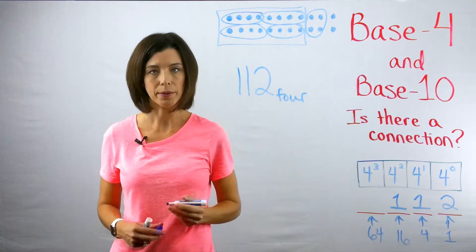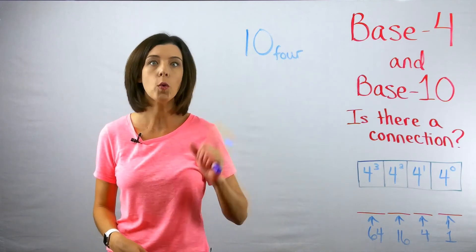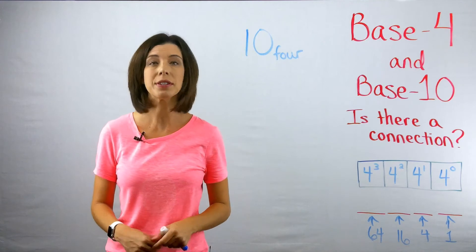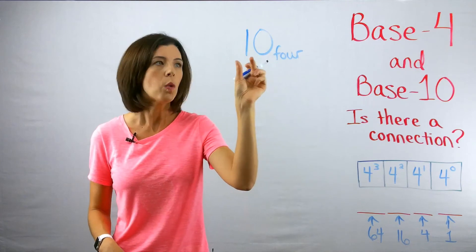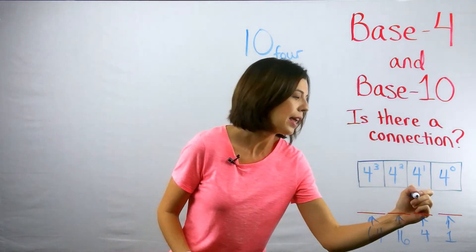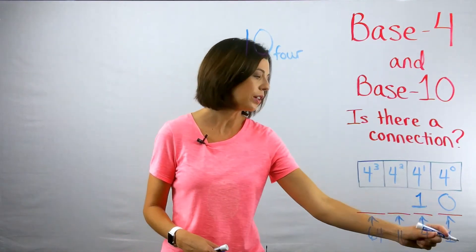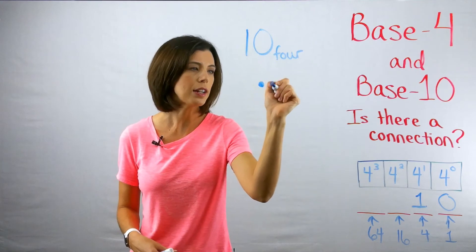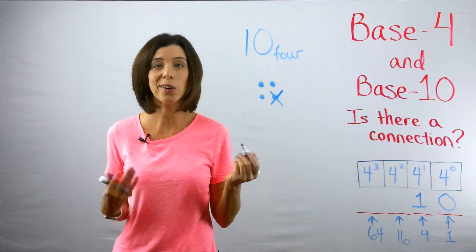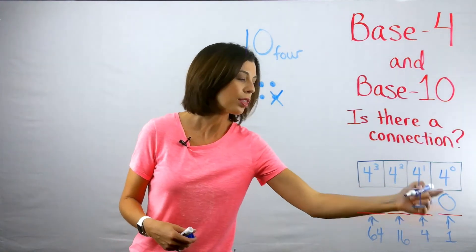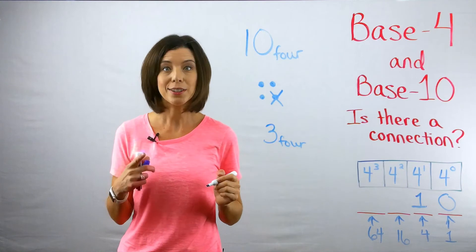What's the number that comes before 10 base four? The easiest way is to draw out your dots. I put it on my base four place value chart: I have zero ones and one group of four, so I draw four dots. If I take one away, I have three units. I write a three in my ones place, giving me 3 base four.